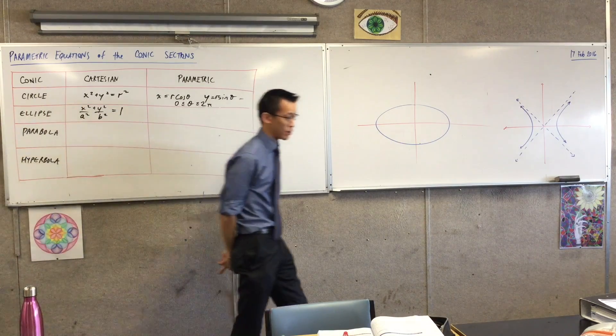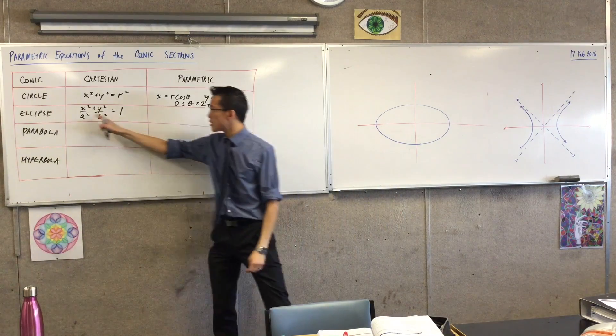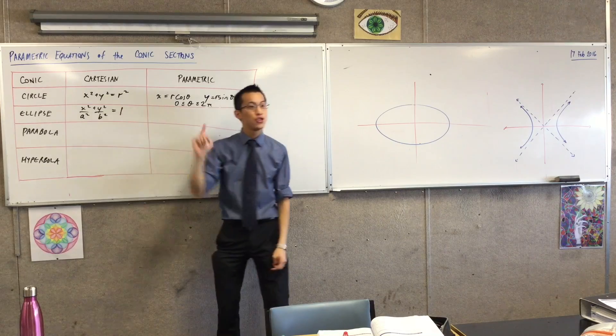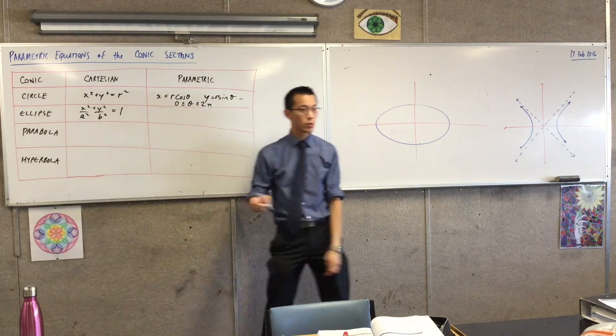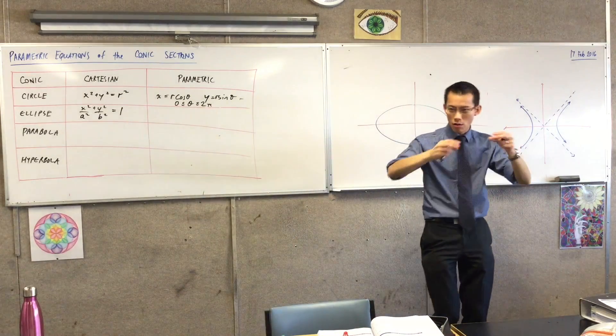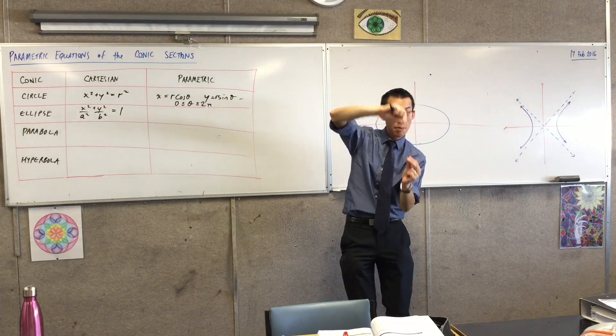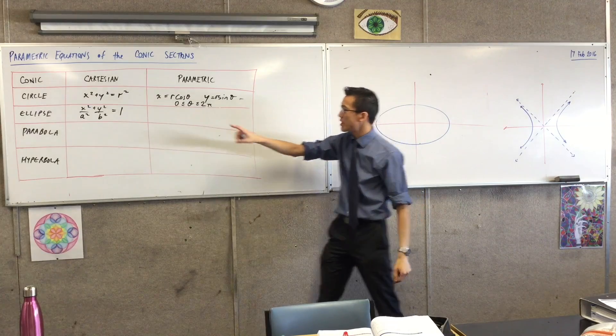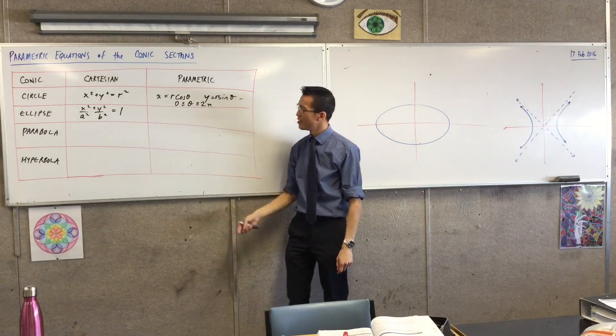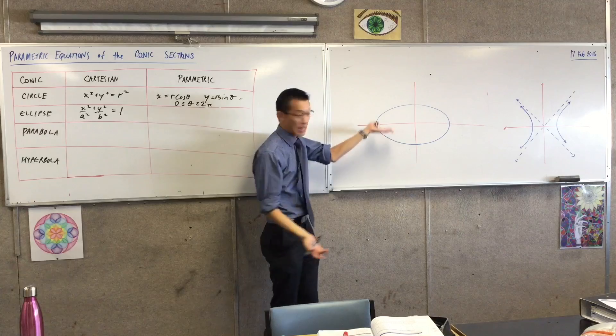Now here's one of the beauties of parametric forms. Because what this does is this takes the unit circle, x squared plus y squared equals 1, and it stretches the horizontal out a times bigger, and it stretches the vertical out b times bigger.